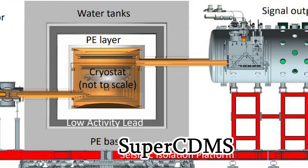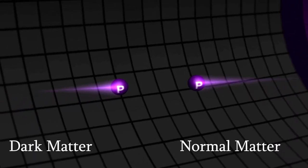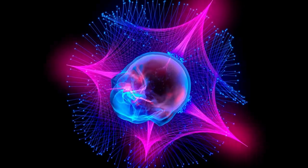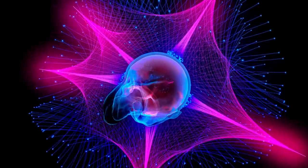XENON1T, LUX, and SuperCDMS aim to directly detect elusive dark matter particles. The core idea is to detect collisions between dark matter and regular matter, which should produce small amounts of energy that would be detectable.